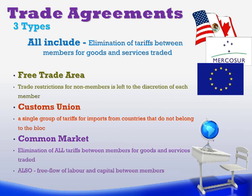Then there's the customs union. This is where a group of countries enter an agreement whereby they again eliminate tariffs between each other, but they have a common understanding — a single group of tariffs for imports into their union. So any member within that customs union who wishes to trade with an outside member will have all members agree to the tariffs or the terms of trade; it's not left up to the individual country.